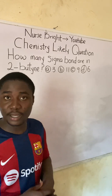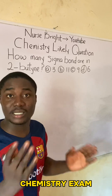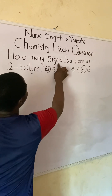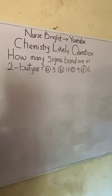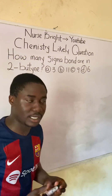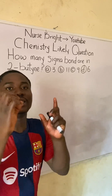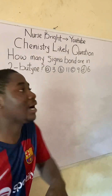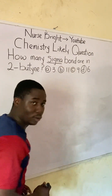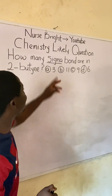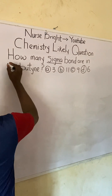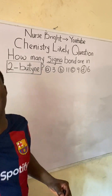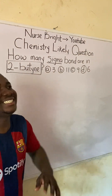If you came across this question in your chemistry exam, how will you solve it? It's actually easy. Let's solve together. The question says: how many sigma bonds are in 2-butyne? This question is extremely easy. First of all, they are asking us to determine the number of bonds present in this compound — but specifically sigma bonds. We have to understand what type of compound this particular substance is. They said it is 2-butyne, so we need to know if this compound is organic or inorganic.